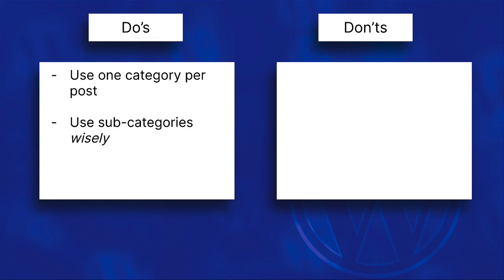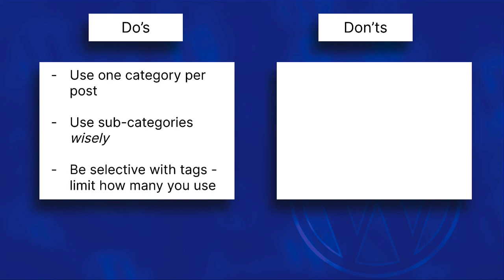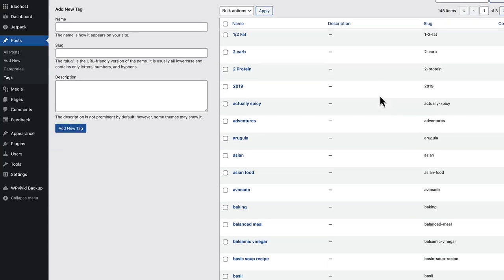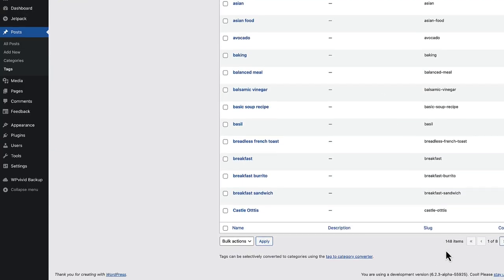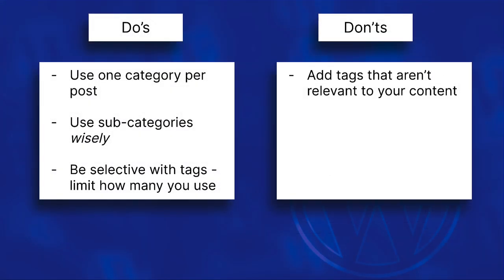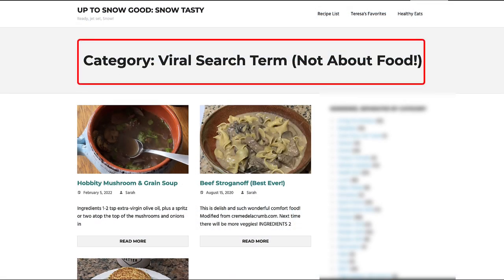Next, use subcategories wisely. When needed, you can create subcategories to further organize content within main categories, helping create a structured, hierarchical organization that is easier for both users and search engines to understand. With tags, be selective — use them to provide specific details or keywords related to your content. Don't overuse tags or create duplicates. It's better to have a limited number of well-utilized tags rather than hundreds of rarely used ones. Don't add tags that aren't relevant to your content; if a post is unrelated to a popular search term, people may get frustrated and search engines may rank your website lower.